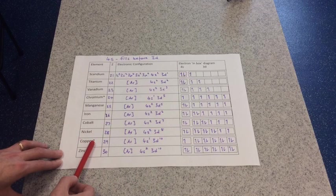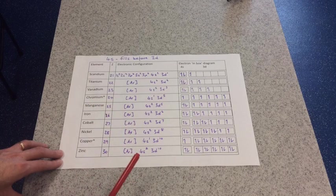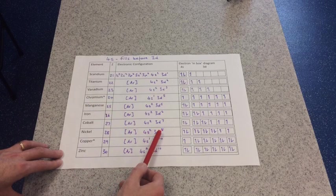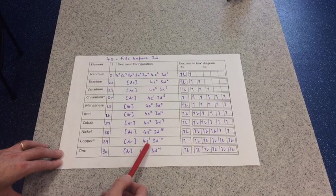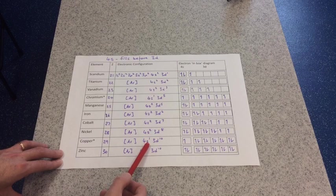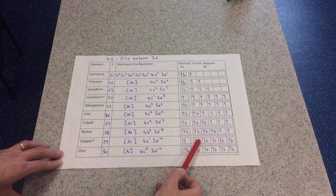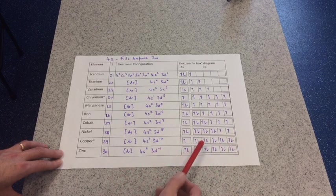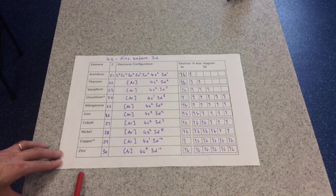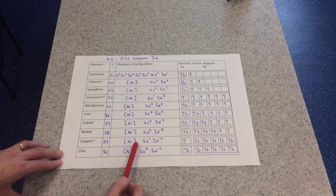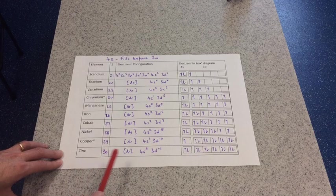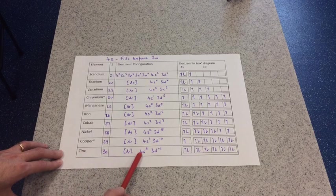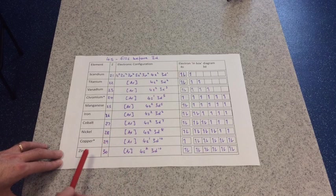And then copper is the next unusual one. You would expect 4s2, 3d9, but it's actually more stable if the 4s electron, one of the 4s electrons, is promoted up into 3d, and then that will fill up the subshell and make it more stable in that arrangement. And so copper has this unusual 4s1, 3d10 configuration. And the last one, obviously, is zinc, and we'll just finish off with 4s2, 3d10.